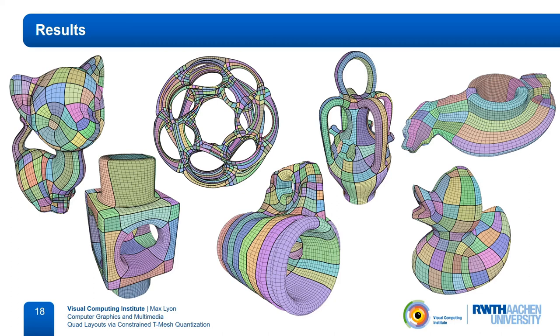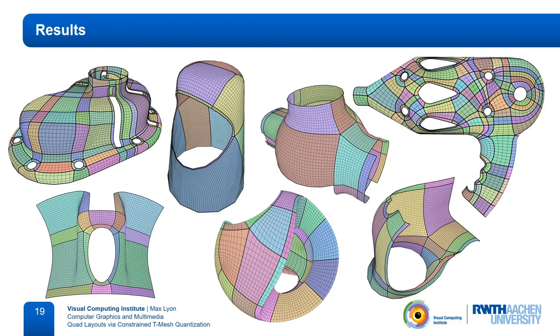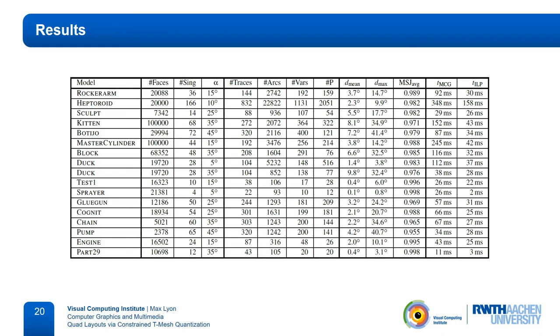We use the resulting layouts to generate quad meshes. Here are some results. The colors identify the patches of the layout. I did not mention this during the presentation, but we also support meshes with boundaries or feature edges, which can be seen here.